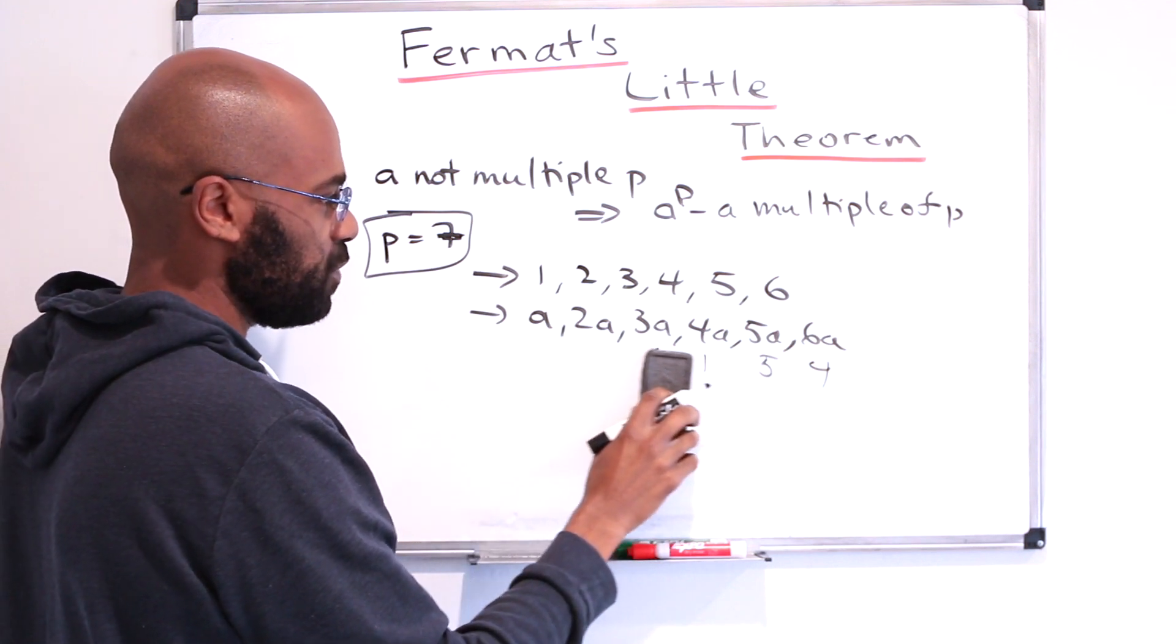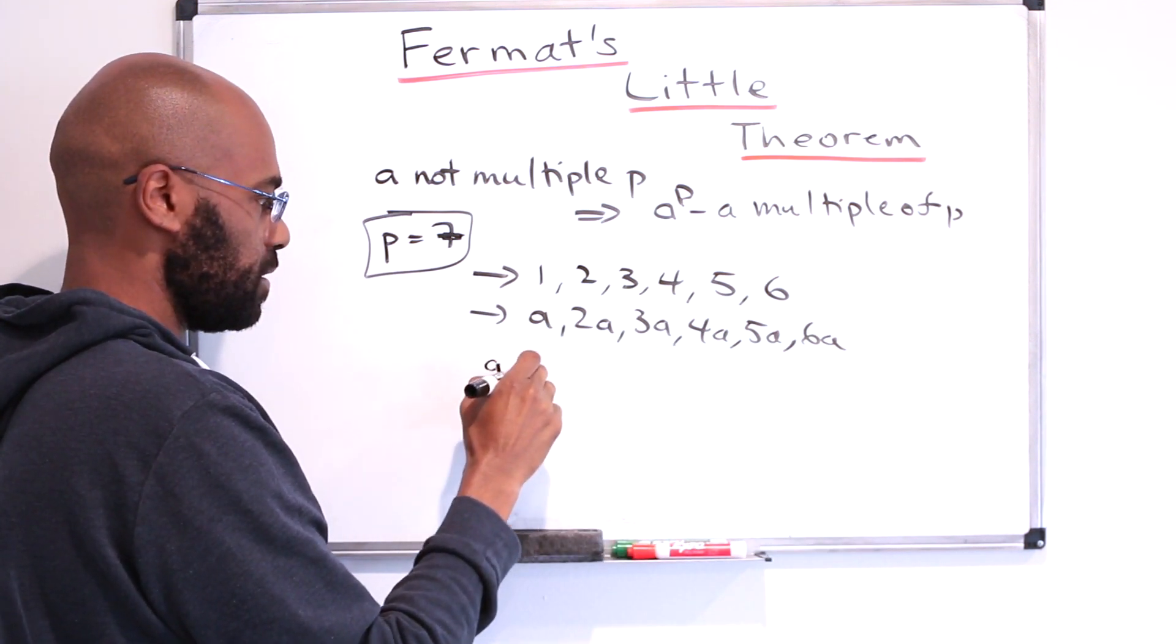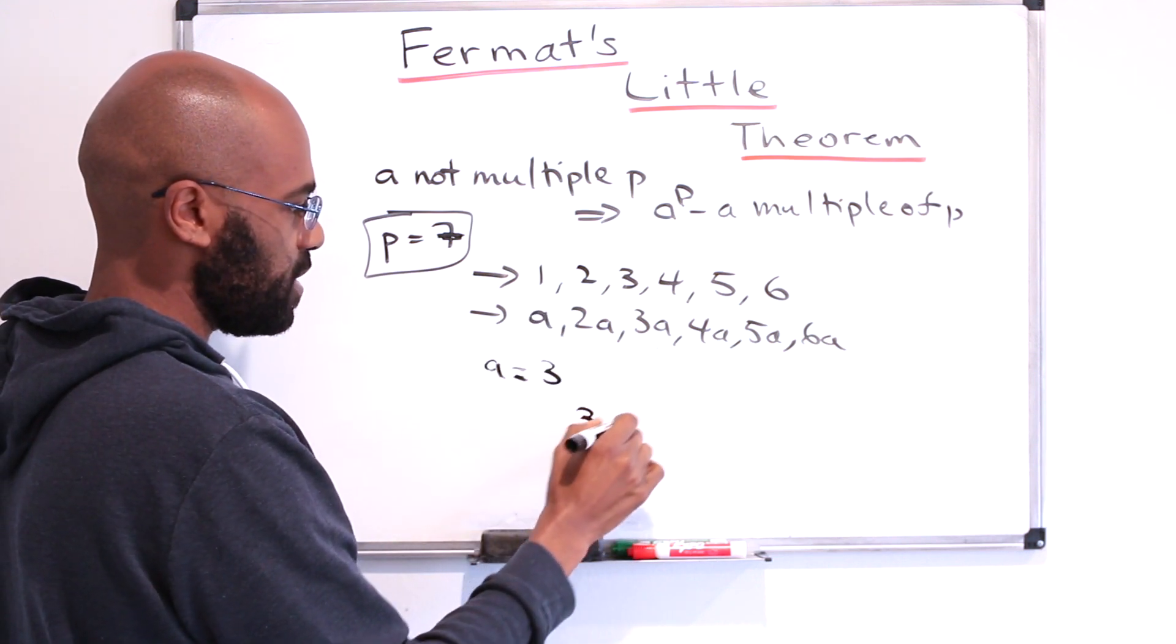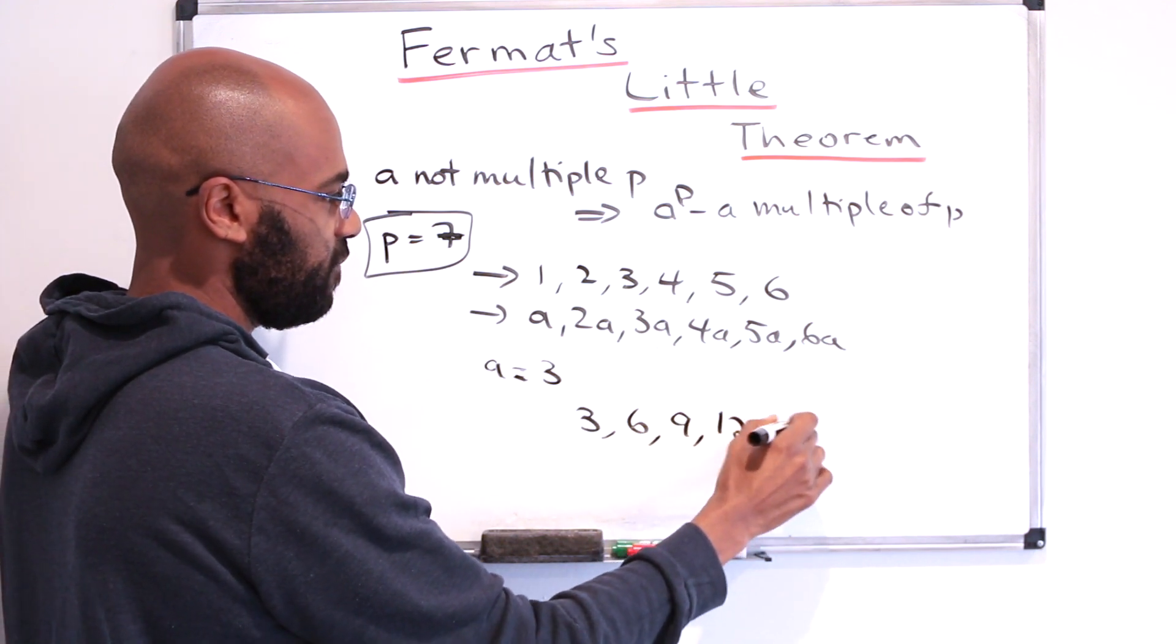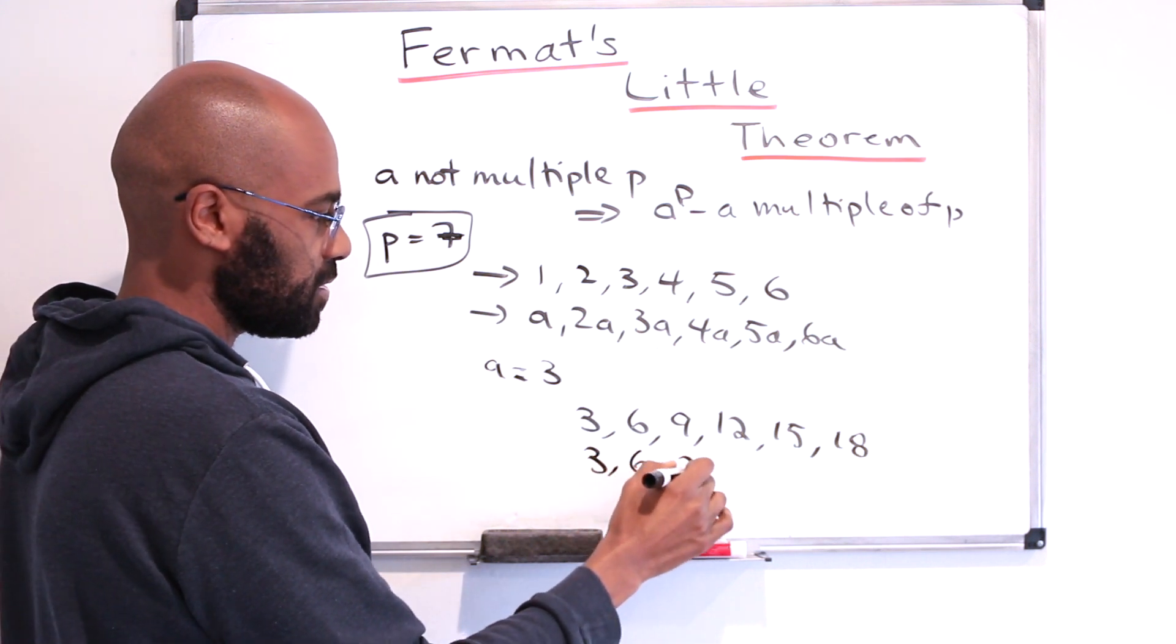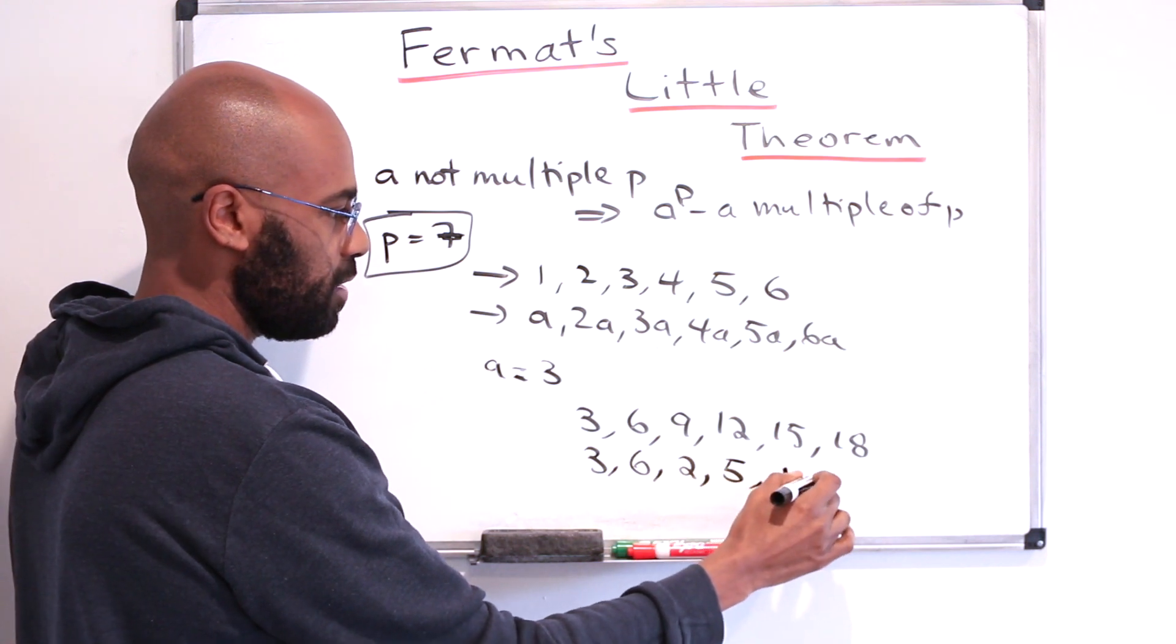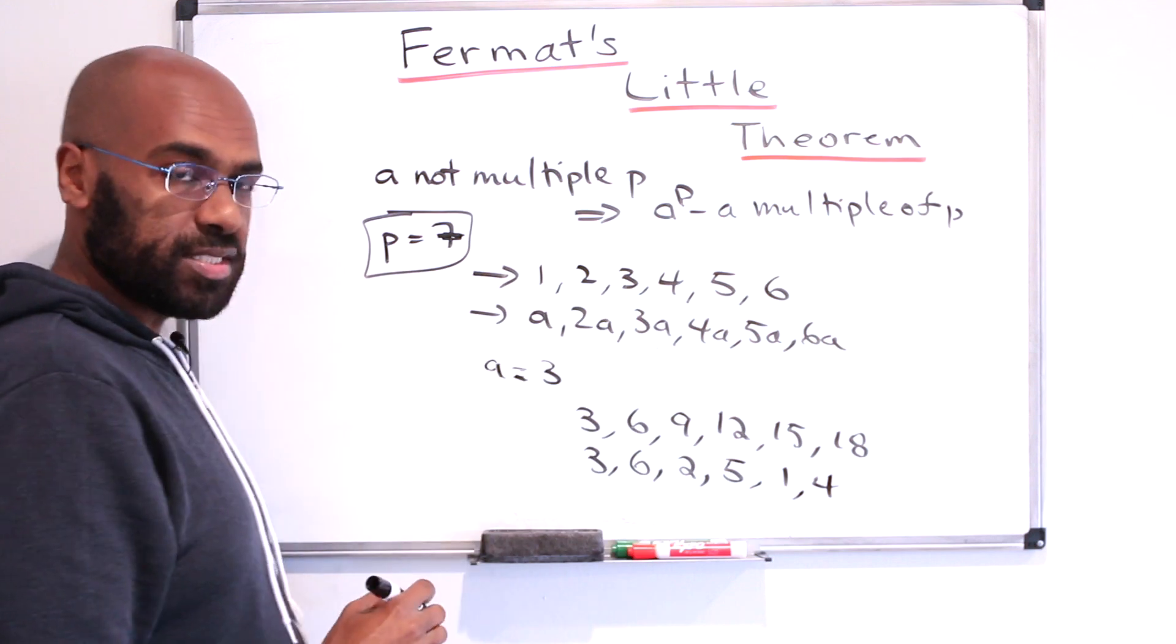Let's actually see an example of this with actual numbers. So for example, if A was, let's say, 3, then these numbers would be 3, 6, 9, 12, 15, and 18. And the remainders we get when we divide by 7 are 3, 6, 2, 5, 1, and 4. Indeed, this is a rearrangement of this list right over here.